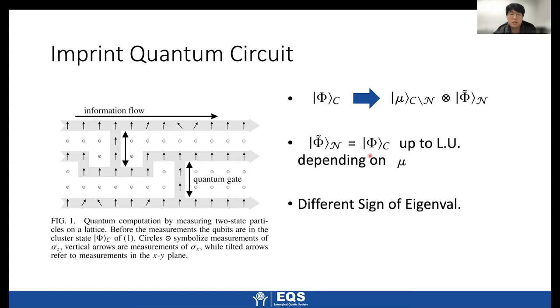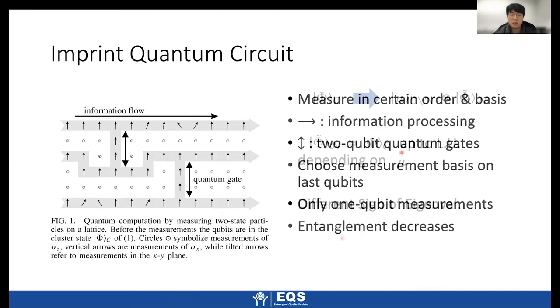So this network cluster state is similar to the original cluster state up to local unitary, depending on the measurement value. And also this network cluster state satisfies this kind of eigenvalue equations only with different eigenvalue. So we have a wire or network. So let's use this network to do some quantum operations. We can measure unmeasured qubits in certain order and basis depending on which operation we want to do. Horizontal wire represents the flow of information and vertical wire is used to implement two qubit quantum gates, which I will explain in later slides.